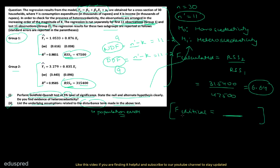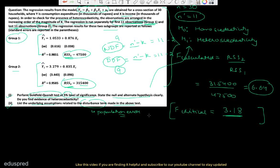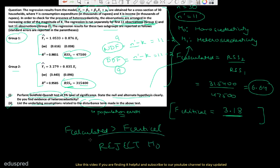Looking at the F table with 9 numerator and 9 denominator degrees of freedom at the 5% significance level, the F critical value is 3.18. Since F calculated (6.64) is greater than F critical (3.18), we reject the null hypothesis. This means we have evidence of heteroscedasticity in this situation.